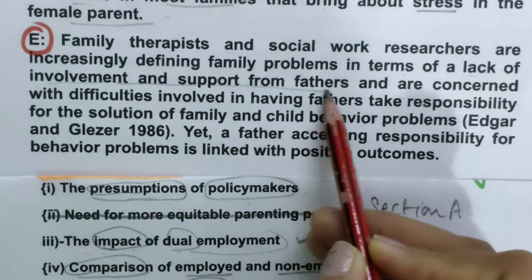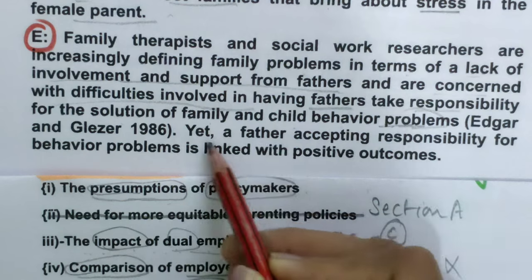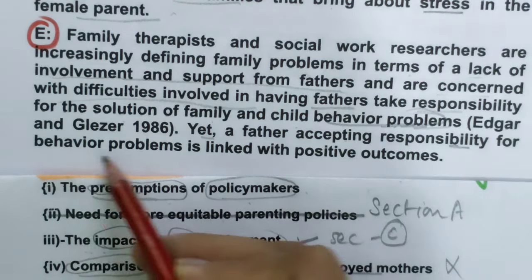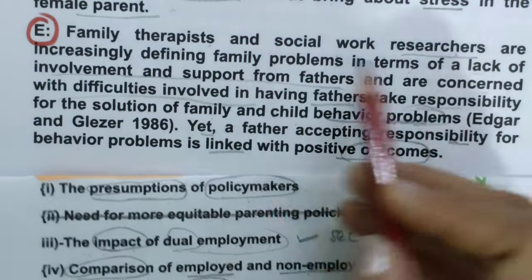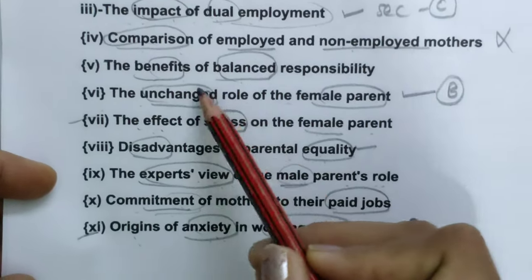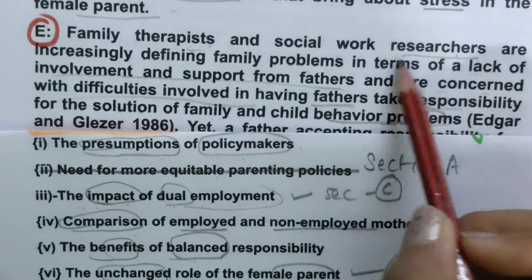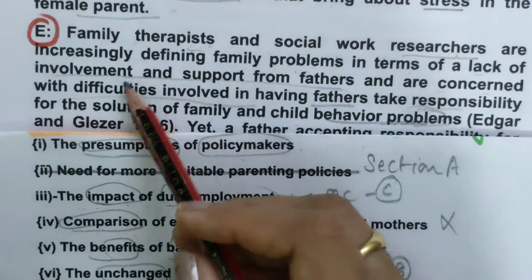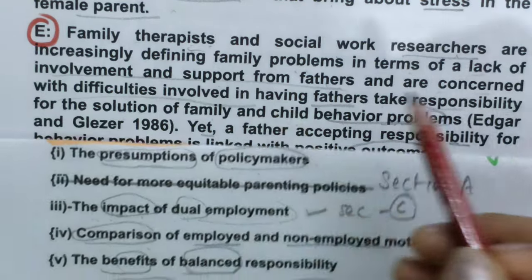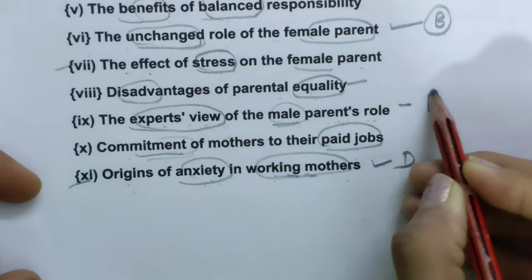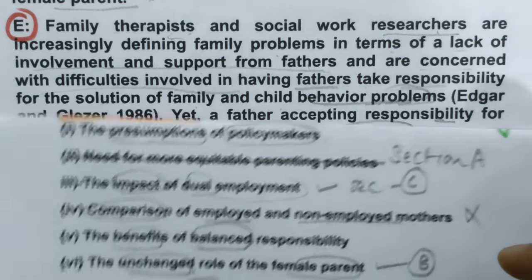For Paragraph E: 'Family therapists and social work researchers are increasingly defining family problems in terms of a lack of involvement and support from fathers, and are concerned with difficulties involved in having fathers take responsibility for the solution of family child behaviour problems. Yet a father accepting responsibility for behaviour problems is linked with positive outcomes.' These two groups — family therapists and social work researchers — are experts discussing the male parent's role. So Section E matches 'The Expert's View of the Male Parents' Role.'